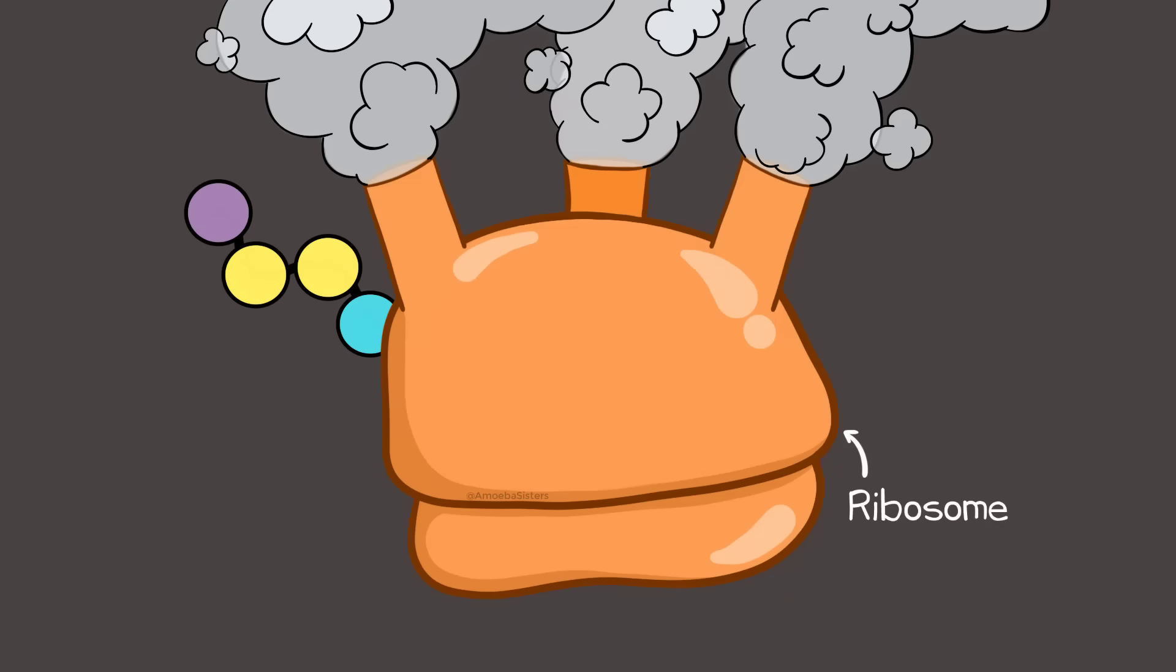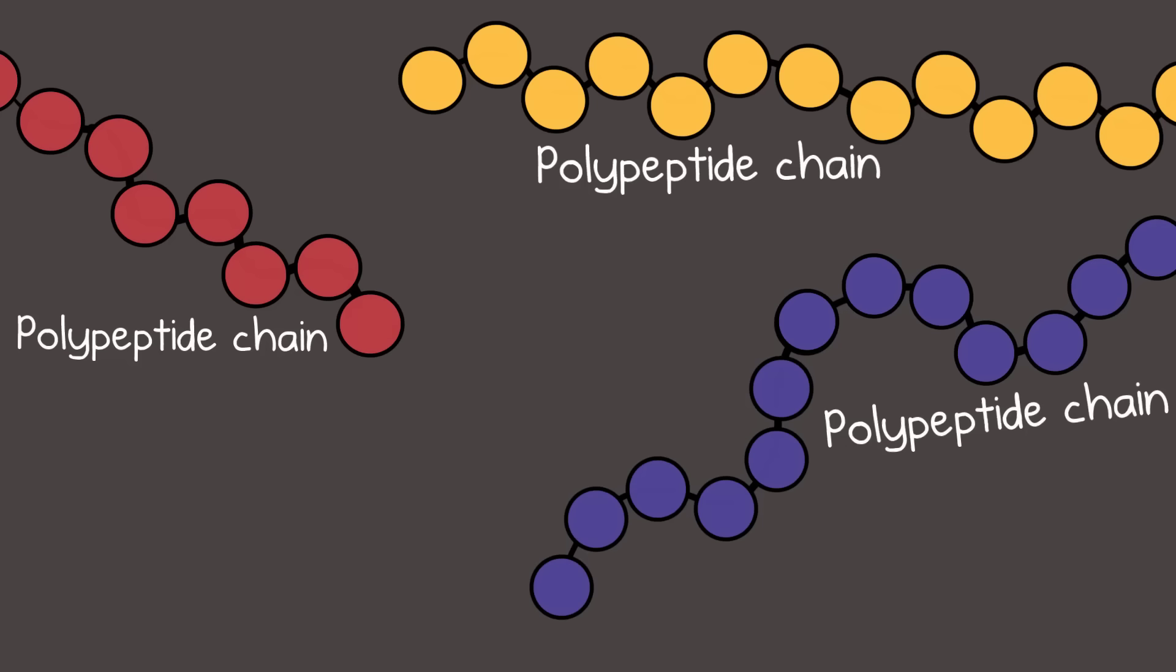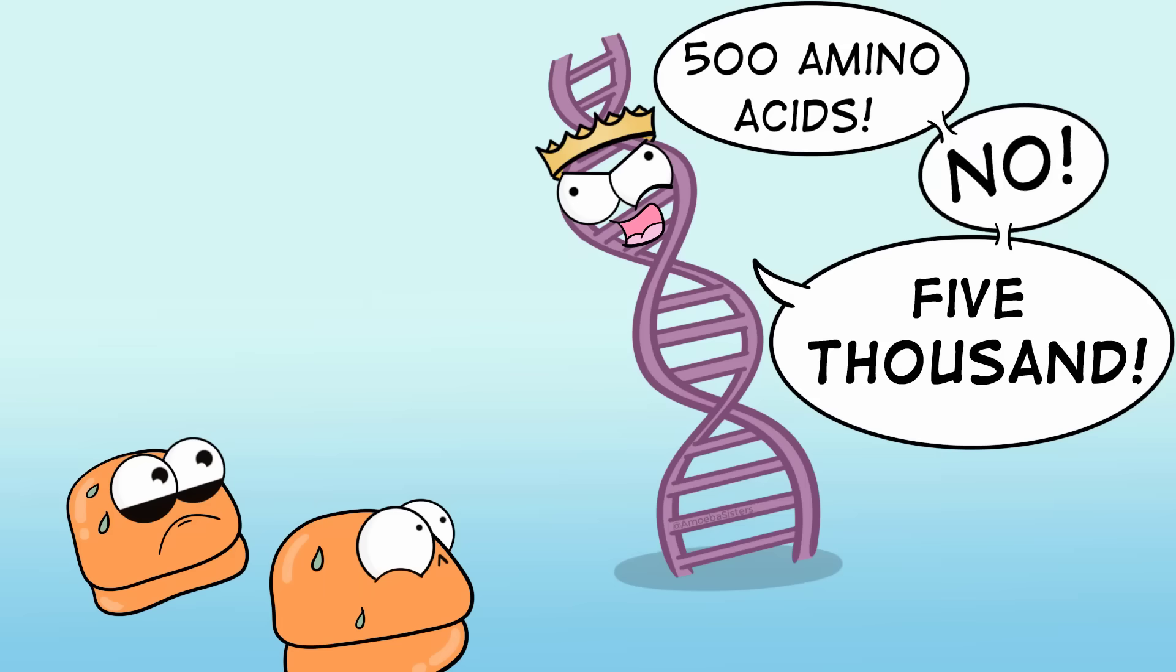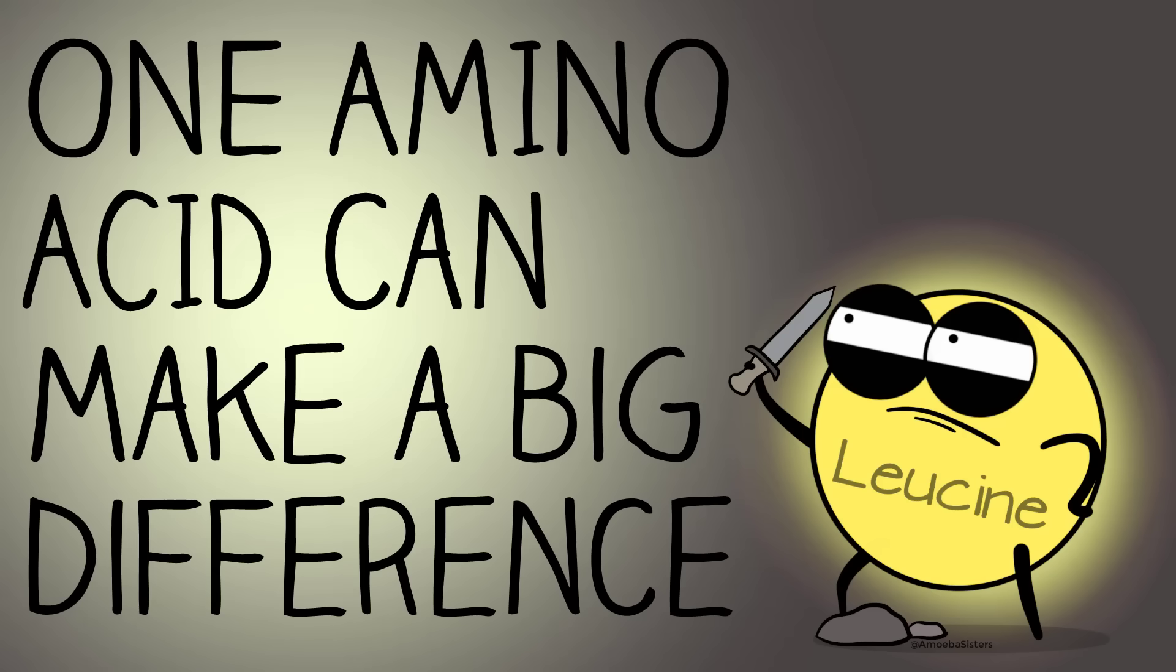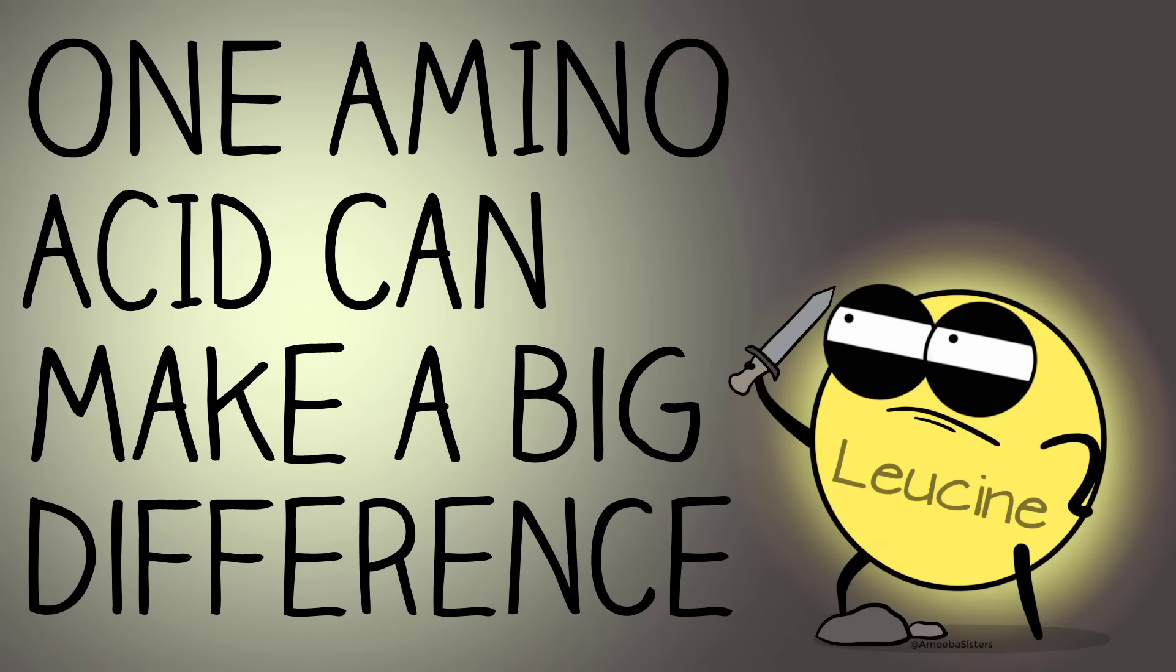In protein synthesis, amino acids are added to form a polypeptide chain and proteins are made of one or more of these polypeptide chains. Genes, which are made of DNA, determine the order and number of these amino acids. That sequence is critical to the protein's structure and function. In our mutations video, we talk about how one amino acid can be changed in sickle cell disease. Even a single change of an amino acid has the potential to affect a protein's function.